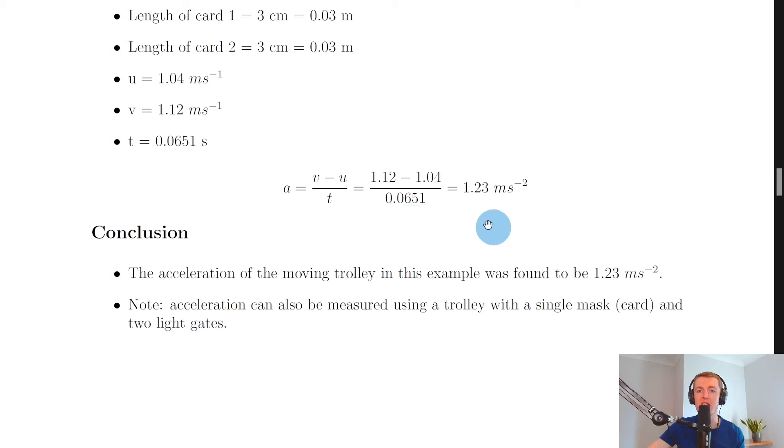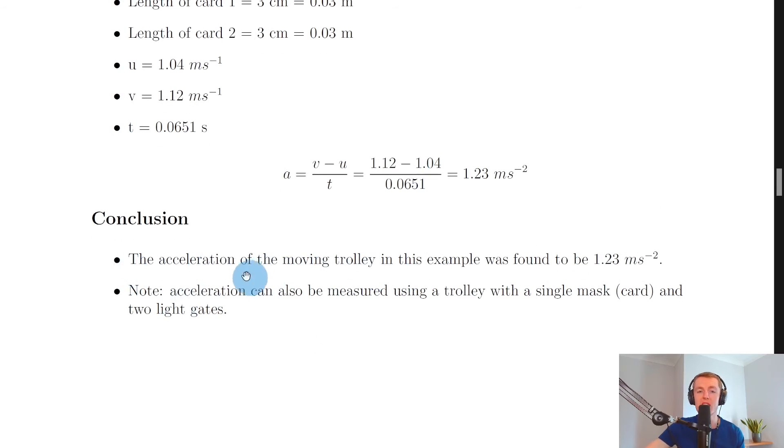So to conclude, we can answer the aim by saying that the acceleration of the moving trolley in this example was found to be 1.23 meters per second squared. So remember that means that the velocity of the object increased by 1.23 meters per second every second because we've got a positive value of acceleration.